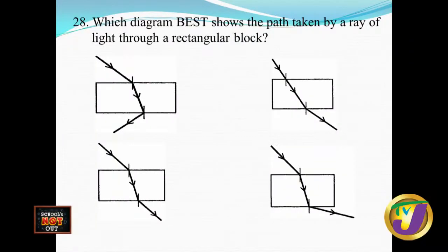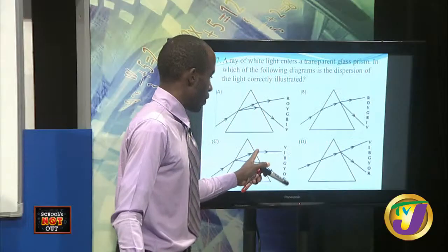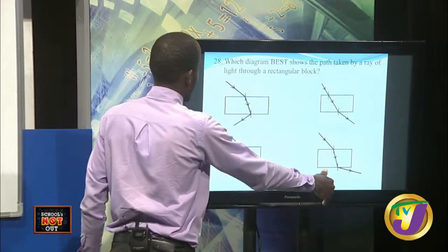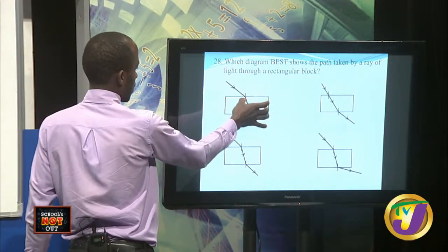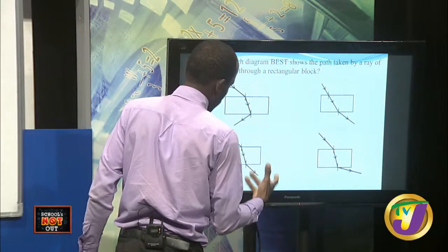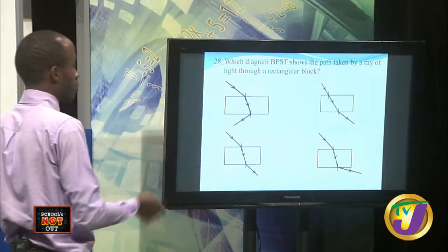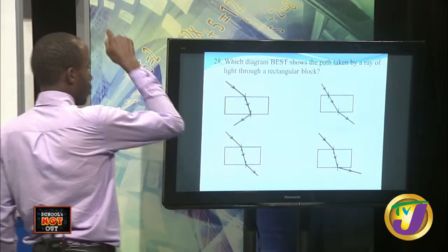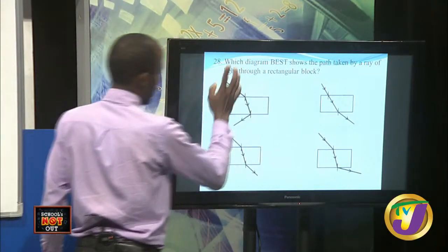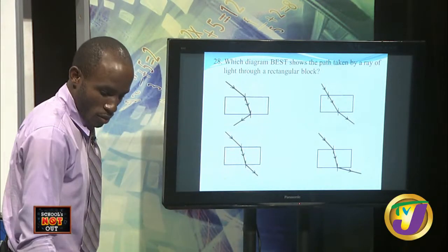Which diagram best shows the path taken by a ray of light passing through a rectangular block? When light passes through a material with parallel boundaries — air to glass to air — light goes in, is refracted, and when it comes back out through the parallel boundary, it is refracted in such a fashion that produces light coming out parallel to where it was originally going. So if it goes in and bends, when it comes back out it bends such that it is parallel to its original direction but laterally shifted. So it's not a straight line through, and it must come out parallel but shifted. The answer is the bottom left diagram.